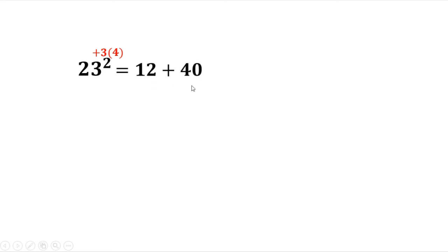Then you add 40, because 20 squared is 400 and the first two digits is 40. So that equals 52. Then for your last number, just take the square of 3, that's 9. Therefore, 23 squared is 529.